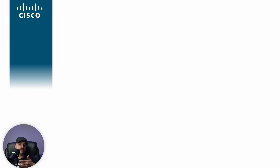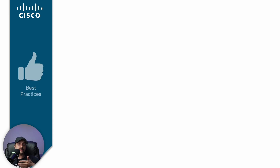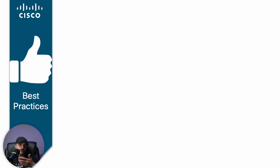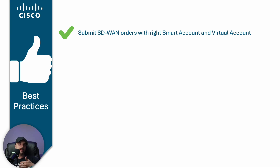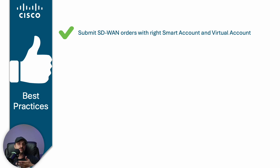As you can see, Catalyst SD-WAN uses smart accounts and virtual accounts in numerous ways within its operation, so it is essential to follow some best practices to ensure smooth operation. The first and most critical practice is to submit the correct smart account and virtual account during the ordering process on Cisco Commerce Workspace, or CCW. Using the correct information for SD-WAN devices, licenses, and controller ordering simplifies day zero and day N operations and helps you avoid unnecessary support cases or challenges down the line.